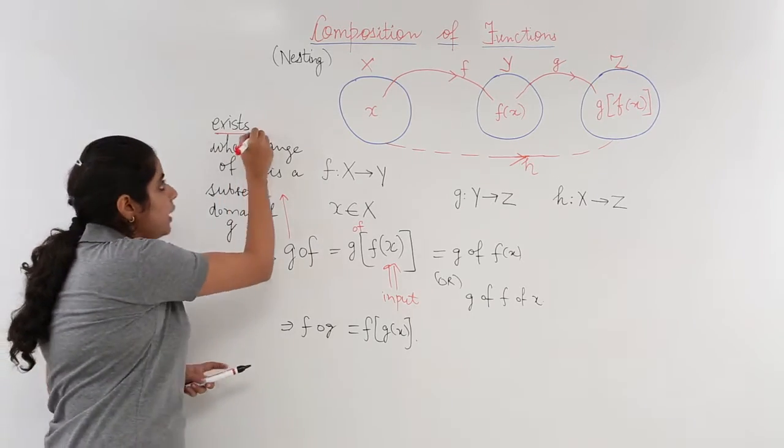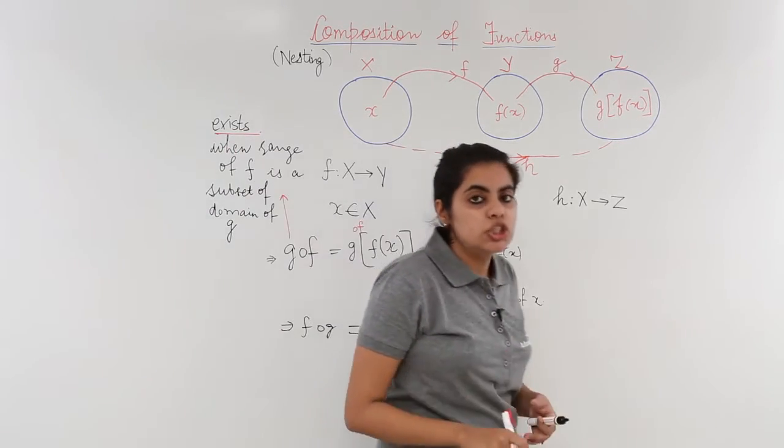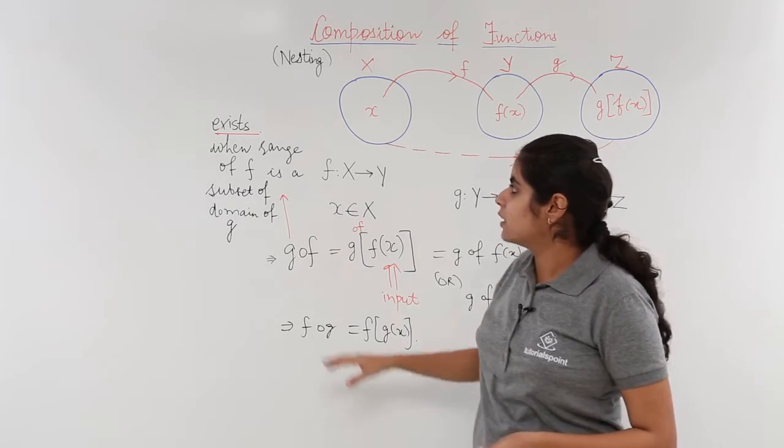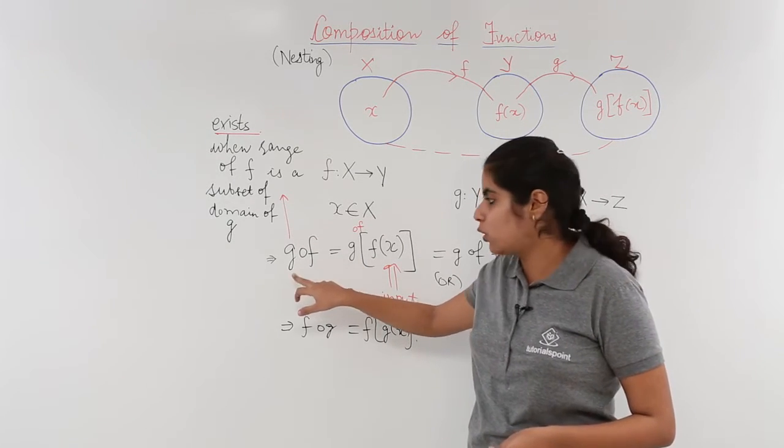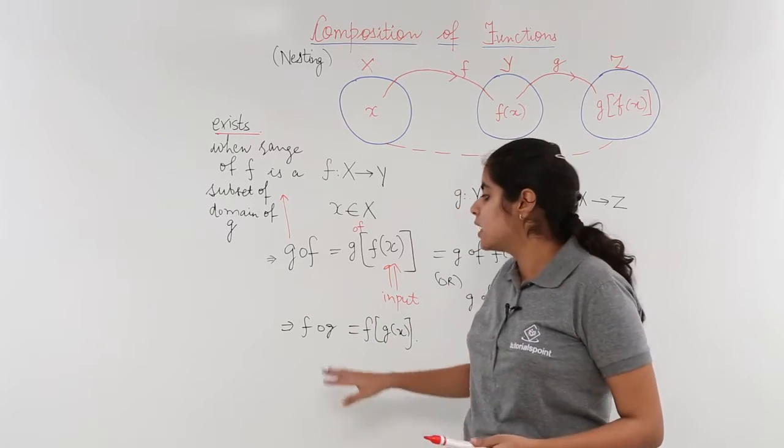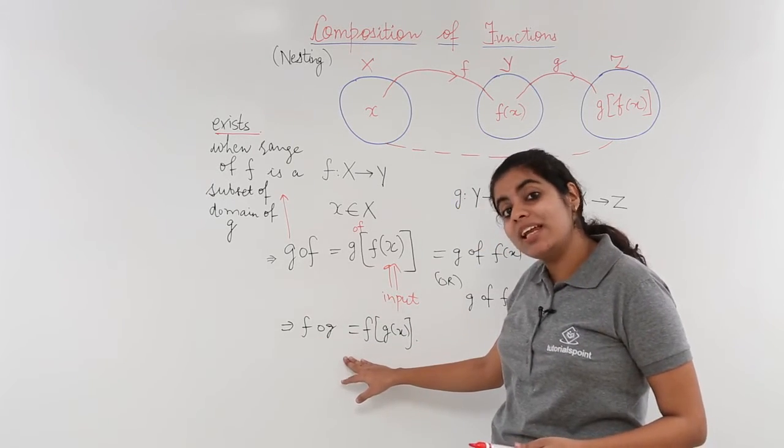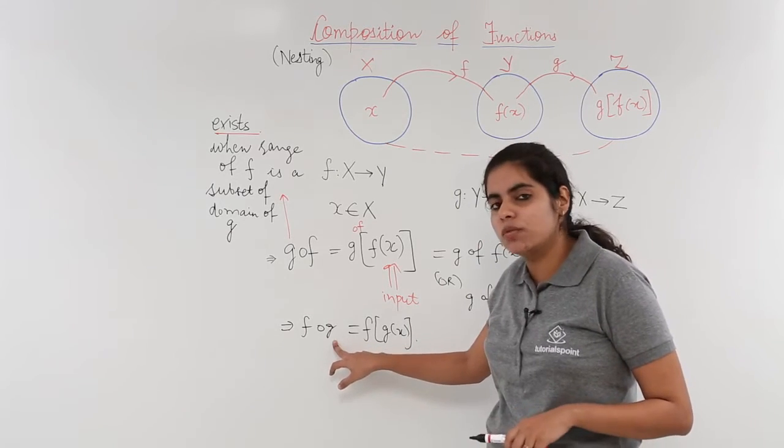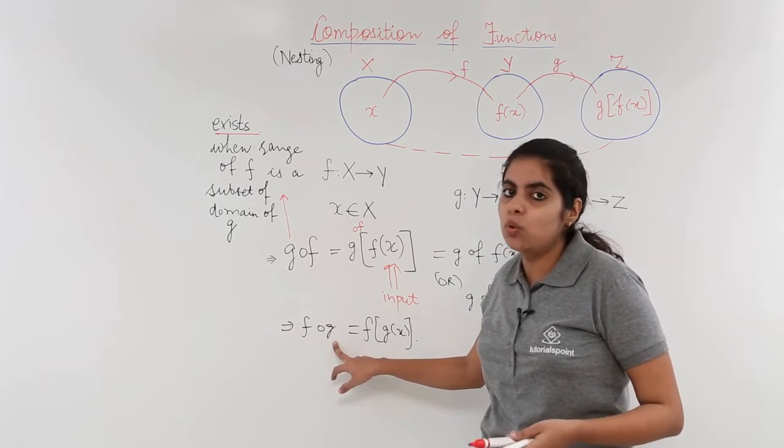This is important. When would g∘f exist? g∘f would exist when the range of the second thing would be a subset of domain of the first thing. Similarly when f∘g would exist? f∘g would exist when the range of the second thing, that is range of g, will be a subset of domain of f.